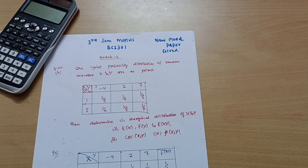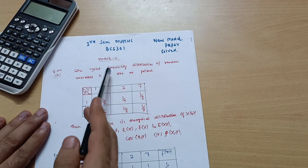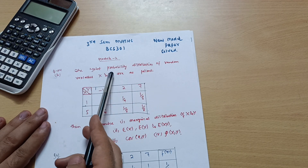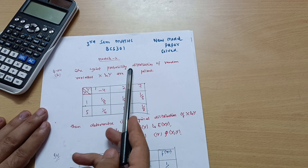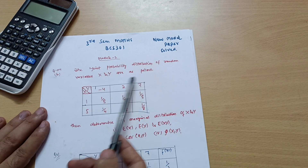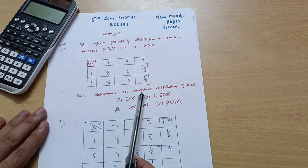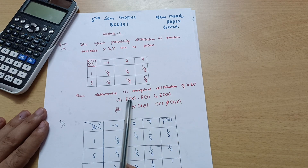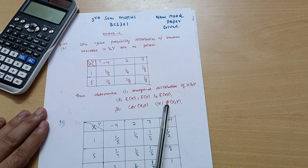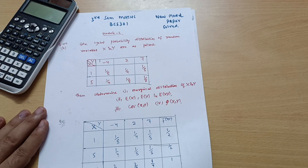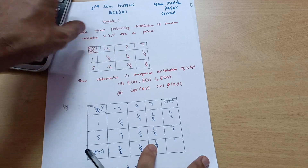Welcome back to my lecture. We are discussing the model question paper for the mathematics subject for CSC stream students. This is a similar problem to what we have done in the previous lecture. The joint probability distribution of random variables X and Y is given in a joint distribution table, and we have to determine the marginal distribution of X and Y, expectation of X, expectation of Y, expectation of XY, covariance of XY, and correlation of XY.